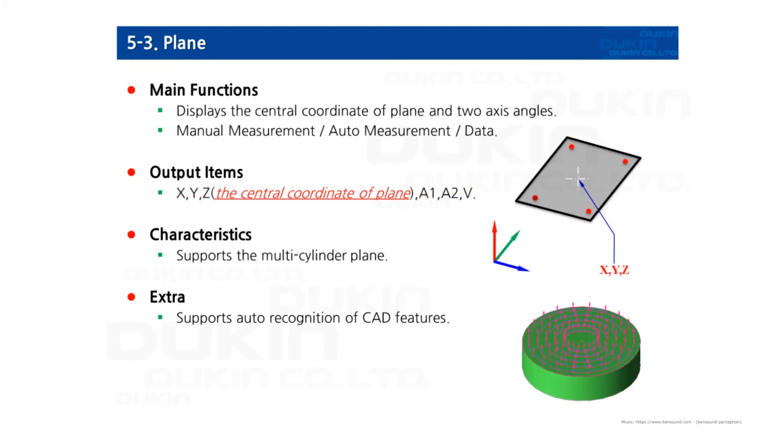On to the next one. The minimum measuring point required of measuring a plane is three points. And in the output, X, Y, Z coordinates are on the center of the plane, and then A1, A2 as axis. The axis of the plane is perpendicular to the surface, and it has two projected axes.